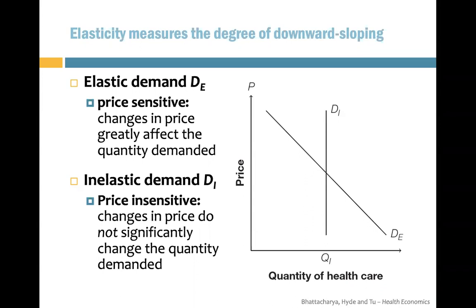Inelastic demand looks almost straight up — it has very little slope. The other type is price sensitive, which applies to things you don't really need. When it gets more expensive, you buy less. We call those elastic demand.